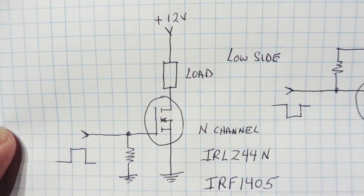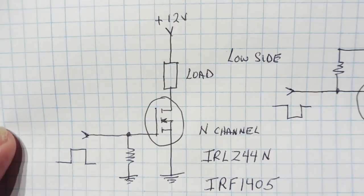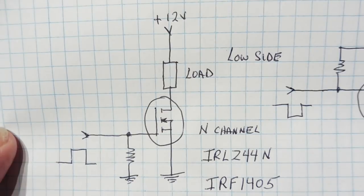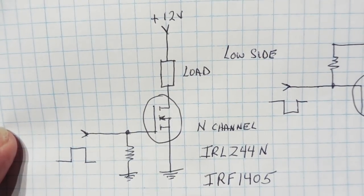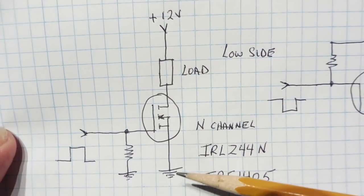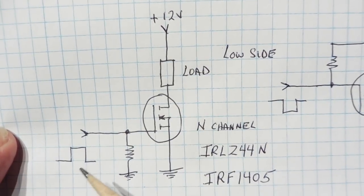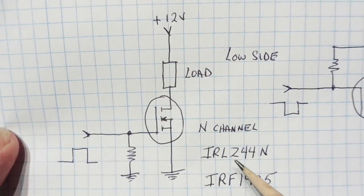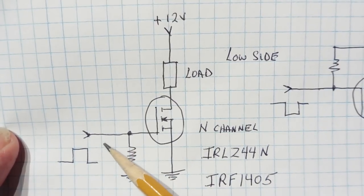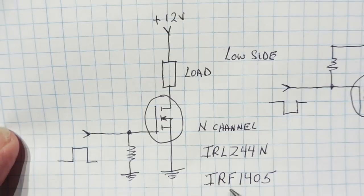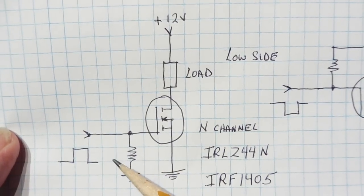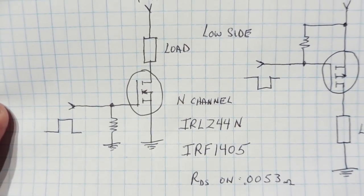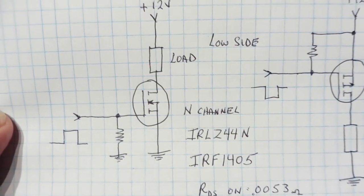Here's the schematic diagram of a low side switching circuit using an N-channel MOSFET. One side of the load is connected to the power supply at +12 volts; the other side is connected to the drain. When we turn on the MOSFET, the load gets its ground through the MOSFET and energizes the load. To turn on the MOSFET, we apply a positive voltage to the gate between the gate and source. For the IRLZ44N (a logic level MOSFET), we need 5 volts at the gate. For the IRF-1405, we need 10 volts between the gate and source, giving us an RDS of 5.3 milliohms.